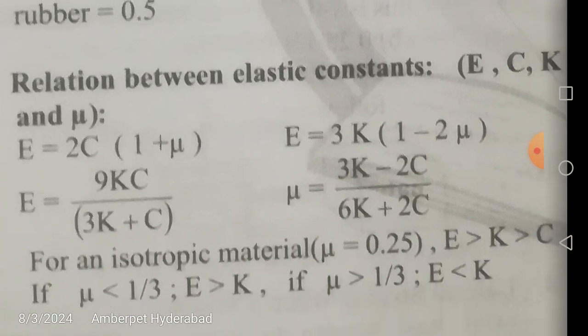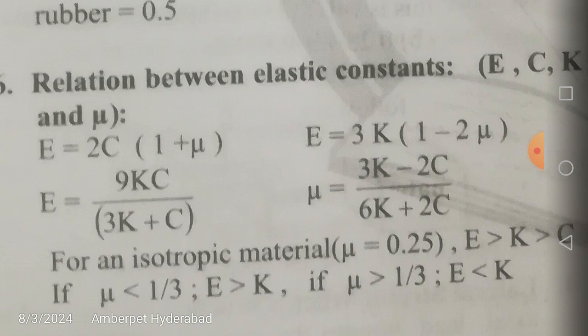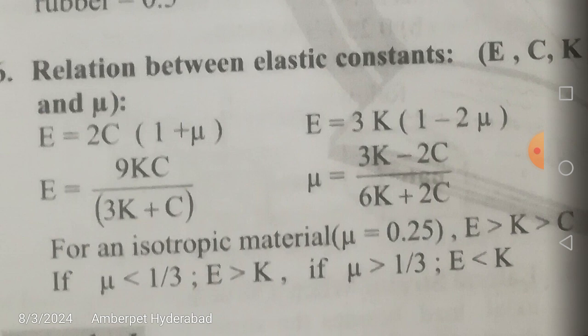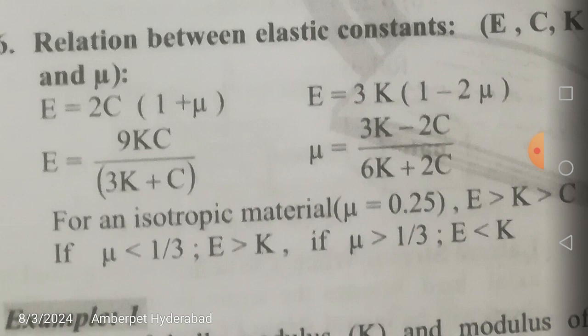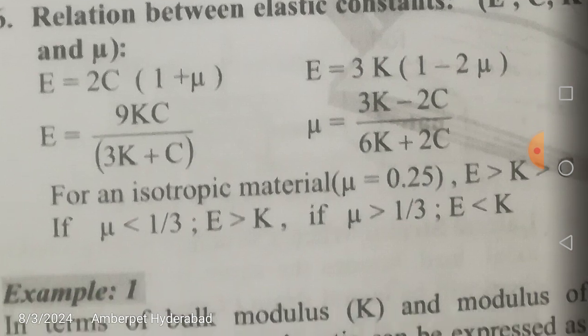Relationship between elastic constants E, C (or G), and K: E equals 2C(1 + μ), where μ is Poisson's ratio, C is modulus of rigidity, and E is Young's modulus. Also, E equals 3K(1 − 2μ). Solving these two equations by eliminating μ — substituting μ = (E/2C − 1) into the second equation — gives E equals 9KC/(3K + C). This is a very important relationship between E, G, and K.